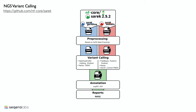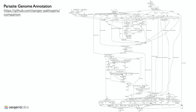Nextflow is a workflow management system. It's open source, available under Apache 2.0, and we're really focused on data analysis pipelines. Typically in an analysis, we have a series of steps — a series of software which we have to run, and data has to be passed from one step to another. You can see here a very idealized view of what a workflow or data pipeline is, shown here as an example for variant calling. In reality, instead of that idealized view, we typically have something more akin to a parasite genome annotation pipeline.